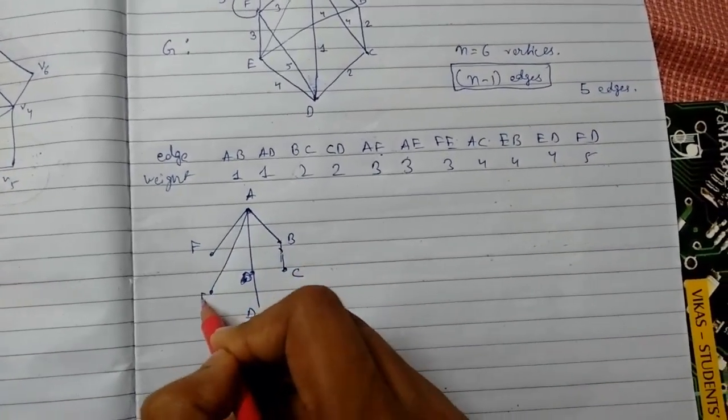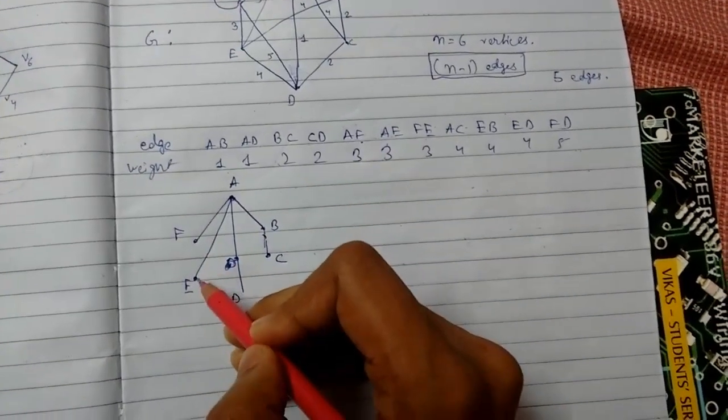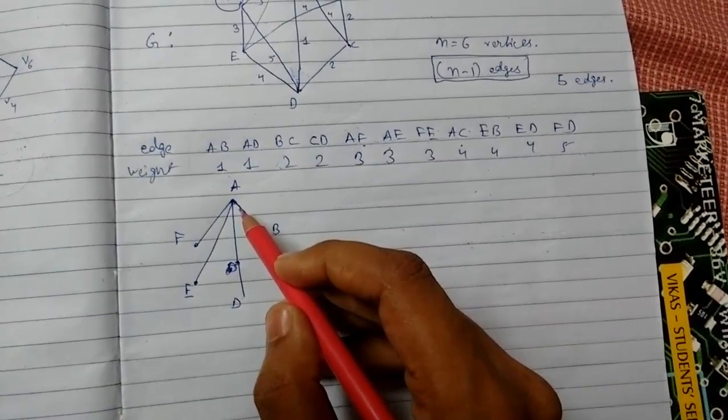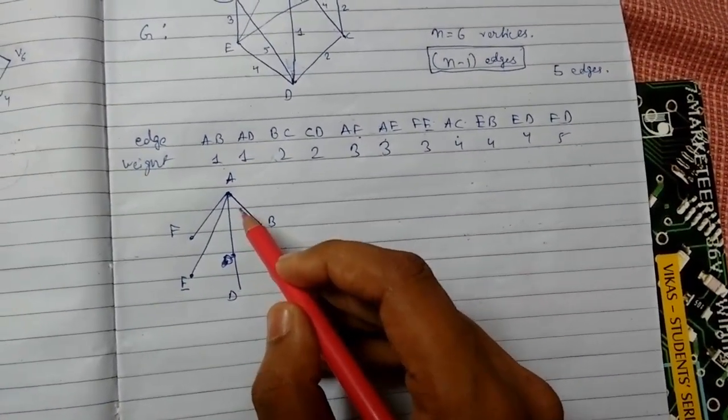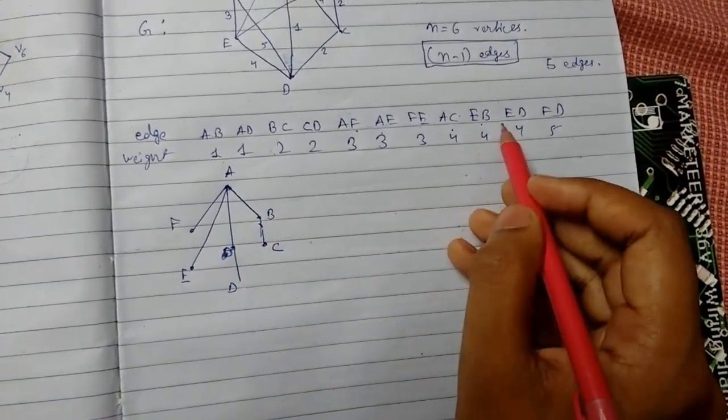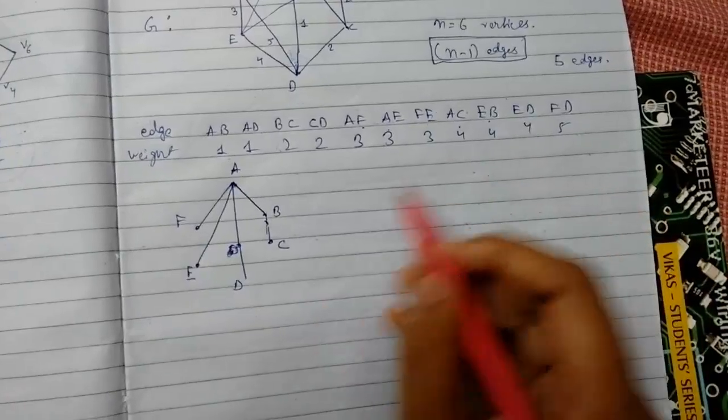Now FE cannot be joined because it will make a circuit. AC also cannot be done because it will make a circuit. EB is also not possible, ED is also not possible, FD is also not possible.